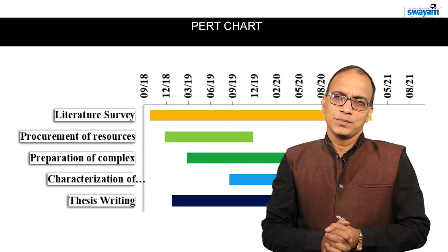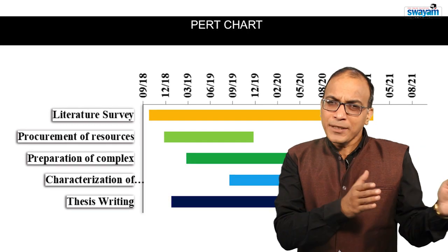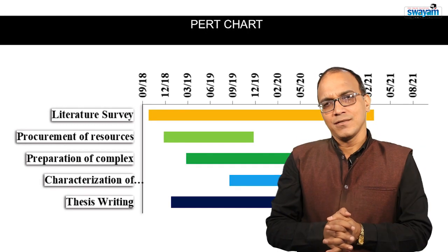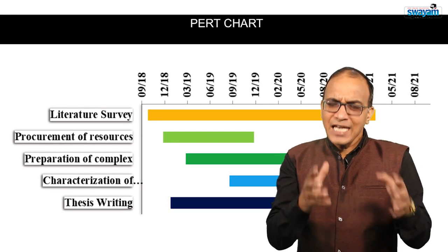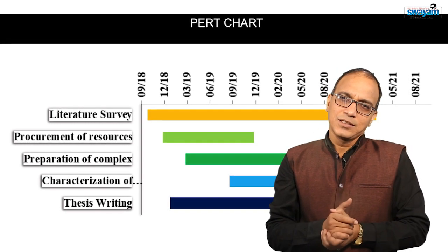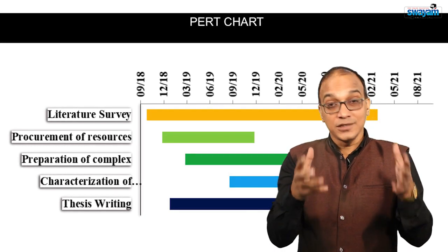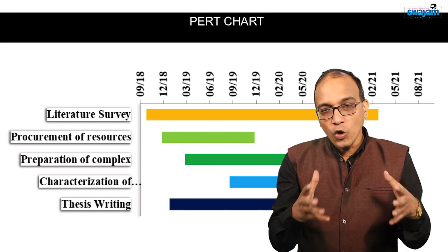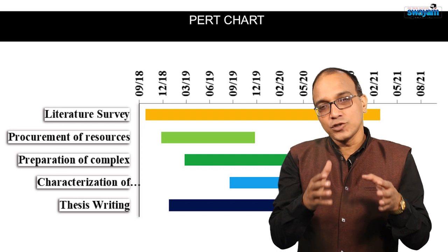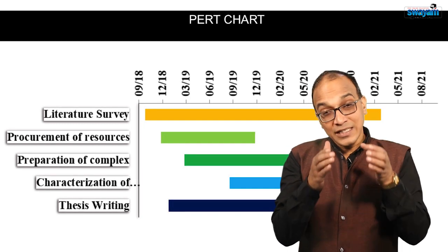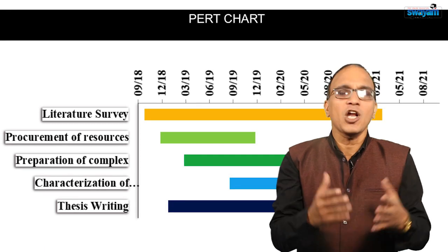The time schedule should be rational so that anyone can track the progress of your work, especially the research degree committee, because you have to report it time to time. That will be the benchmark of your real-time progress, which you have given in the synopsis.